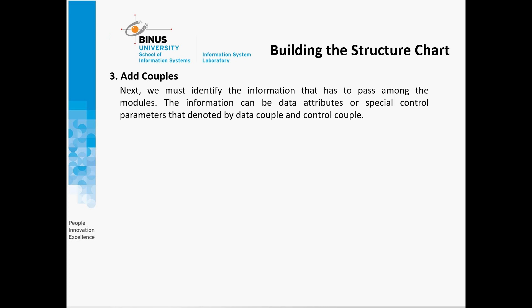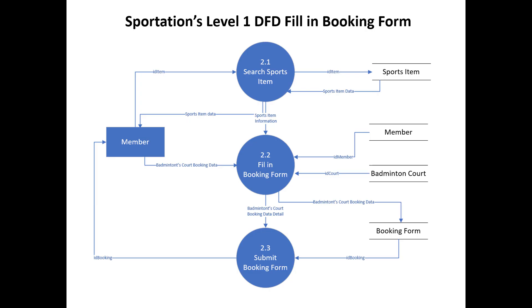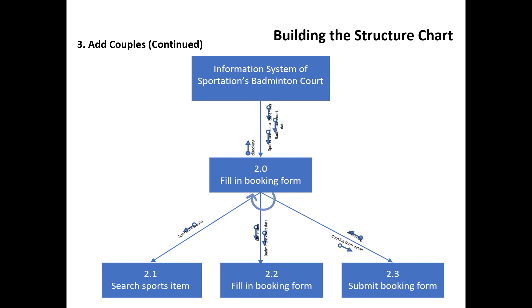The third step is to add couples. We must identify the information that has to pass among the modules. The information can be data attributes or special control parameters, denoted by data couple and control couple. We will look at the data flow in the data flow diagram level one for fill-in booking form. Data flows in the data flow diagram provide guidance about the couples to add, since input and output flows of DFD processes will also be input and output flows of structure chart modules. Input data flow in the DFD becomes a data couple in the structure chart, and output data flow becomes a control couple in the structure chart.